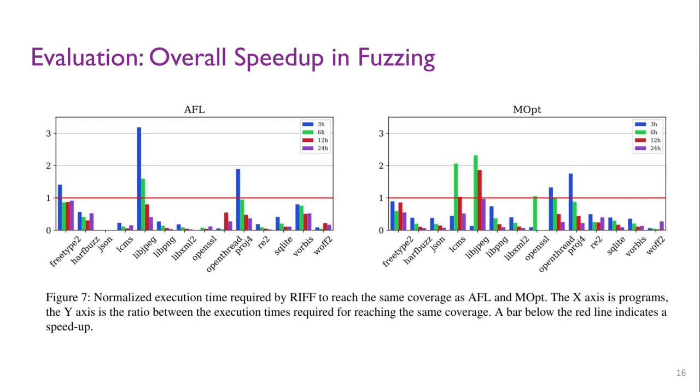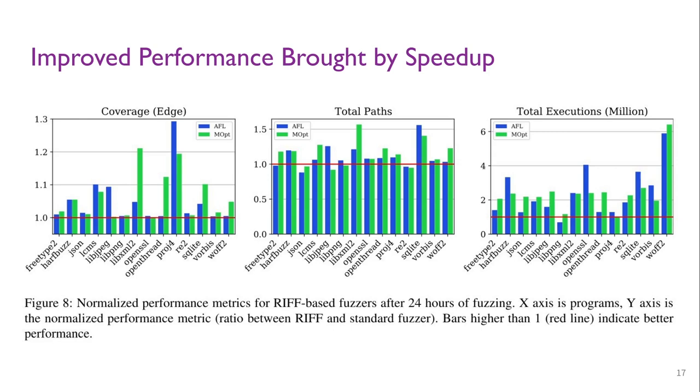For individual programs, the improvements are consistent. Even for the worst program, FreeType2 on AFL and LibJPeg from AFLMOpt, RIF still reached the final coverage 2.1 and 0.8x faster before the baseline versions. The speed-up in coverage pipeline also brought improved overall fuzzing performance.